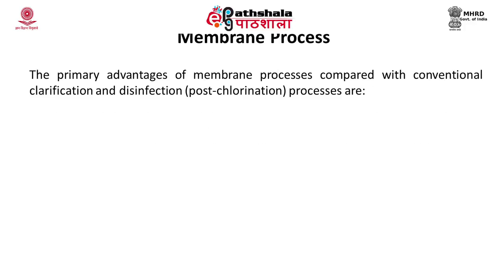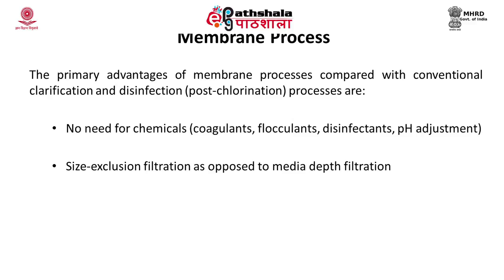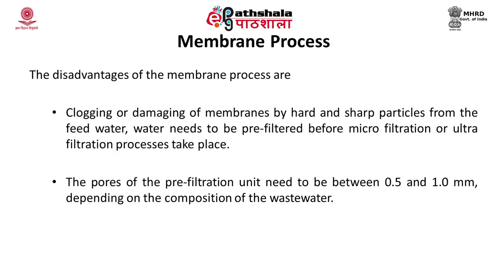The advantages of membrane processes include no need for chemicals like coagulants, flocculants, or disinfectants — unlike other processes where chemicals are added to water. The second advantage is size exclusion filtration, and the process is simple and automated. The drawback of membrane processes is potential damage to the membrane by hard and sharp particles from the feed water, so the water needs to be pre-filtered before membrane treatment, and the pore size of the pre-filter can be adjusted depending on the composition of the water.